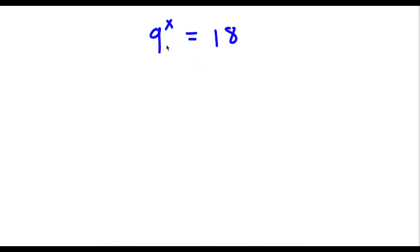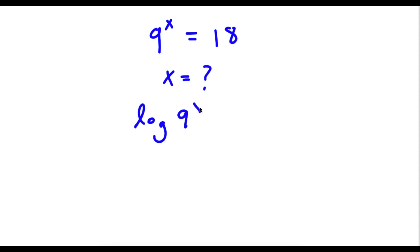So I have 9 to the power of x is equal to 18, and I want to find the value of x. The first thing I'm going to do is take the log on both sides. So now I have log 9 to the power of x is equal to log 18.